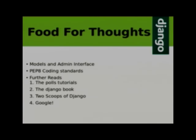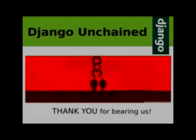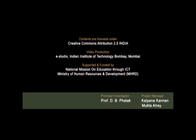For further reads, I would suggest going to the Django site where there are four to five parts of the polls tutorial. They are very basic and very informative — I suggest you go through that. There is also a site called the Django Book, which explains Django and its components in detail. One of my personal favorites is Two Scoops of Django — the writer makes the language so lucid that you come to know about the very basic concepts very easily. Otherwise, Google is always at your help. So this is how we unchained Django. Thank you for bearing with us.